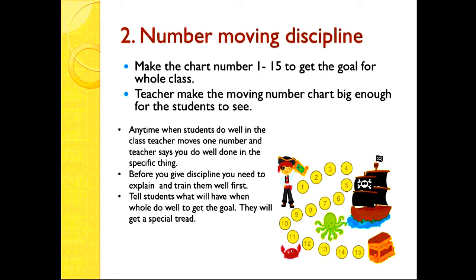To implement this, make a chart numbered one to 15 — this can be done for individual students or the whole class. Make the moving number chart big enough for students to see. Anytime a student does well, the teacher moves one number and says specifically what the student did well. Before you use discipline, you need to explain and train them well first.